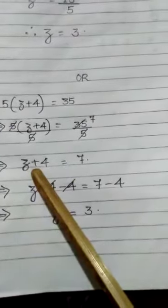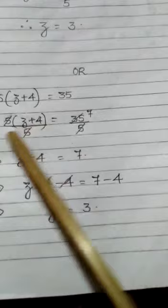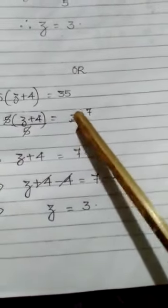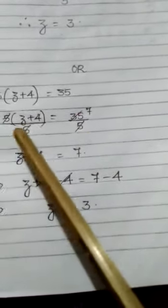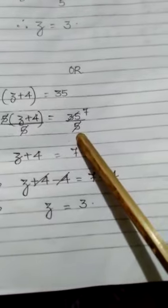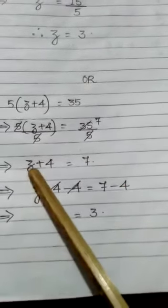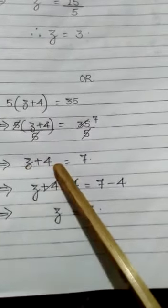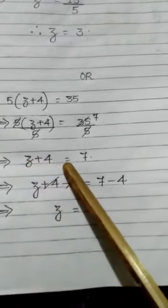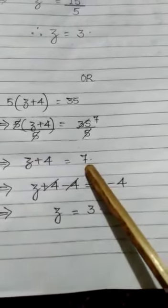5 multiplied by z plus 4 divided by 5 is equal to 35 divided by 5. So here both the sides are divided by 5, and we reach at the step z plus 4 is equal to 7.